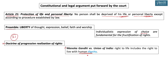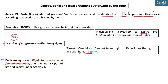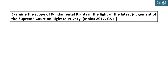Two key takeaways so far: Article 21 includes the right to a dignified life incorporating the value of liberty. In August 2017, the Puttaswamy judgment came, in which the Supreme Court stated unequivocally that the right to privacy is a fundamental right and an intrinsic part of the right to life and liberty under Article 21. The court applied the doctrine of progressive realization of rights to include privacy within Article 21.